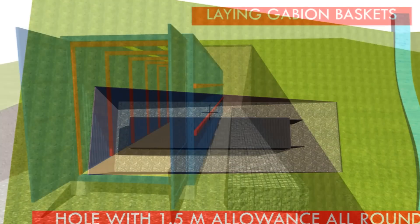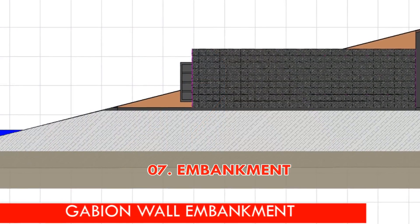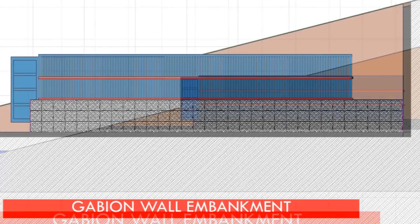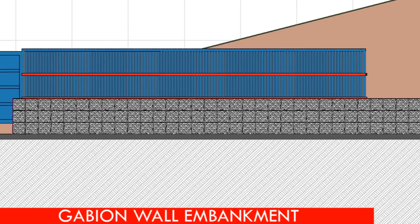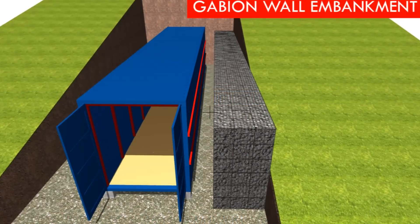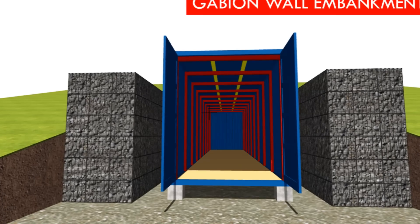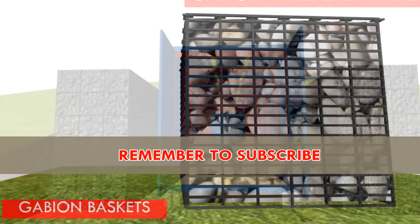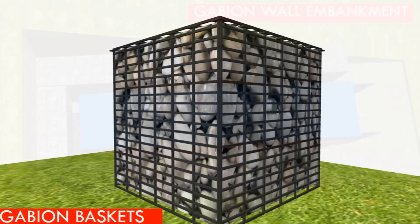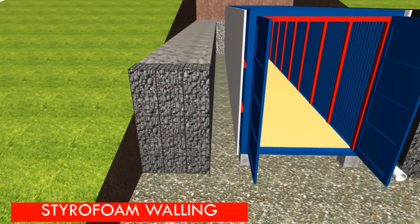Number seven: build an embankment around the hole you dug. Since the containers will be in an underground environment, underground water, moisture, and dampness must be controlled. Soil with high mineral content can damage your containers through electrolysis, which eats away the steel. Build an embankment around the containers leaving a gap of at least 600 millimeters between the containers and the embankment. The embankment can be built using gabion baskets, as in this design, or alternatively using old tires or sandbags filled with properly drained material.